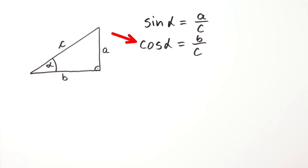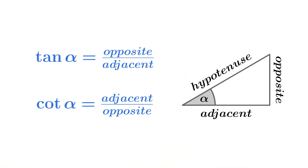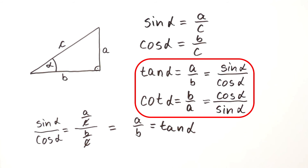We first recalled that the sine and the cosine of an acute angle are equal to the ratios of the corresponding leg to the hypotenuse. Then we said that in the same way that those ratios don't depend on the particular right triangle but rather on the angle alpha, the ratios between legs will also depend only on the angle alpha. The ratio of the opposite to the adjacent leg we defined as the tangent of alpha, while the ratio of the adjacent to the opposite leg we defined as the cotangent of alpha. In the end, we saw that we can represent the tangent of alpha and the cotangent of alpha using the sine of alpha and the cosine of alpha.